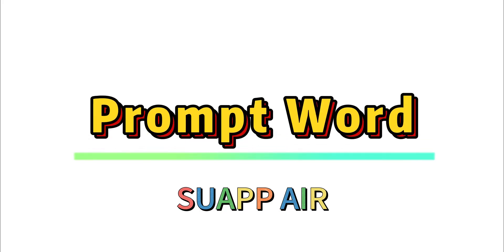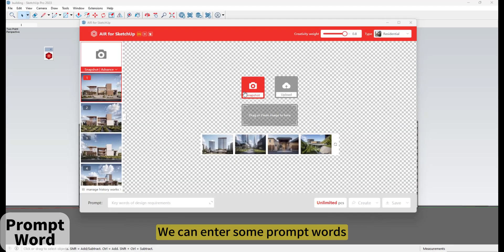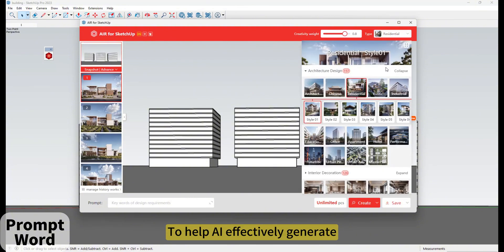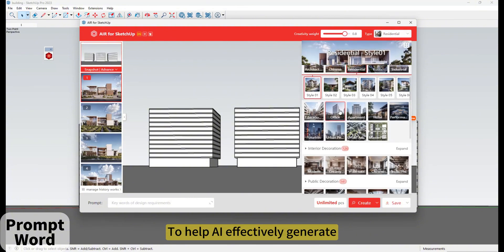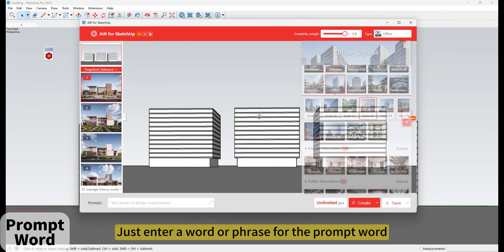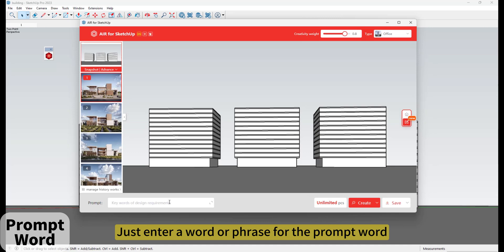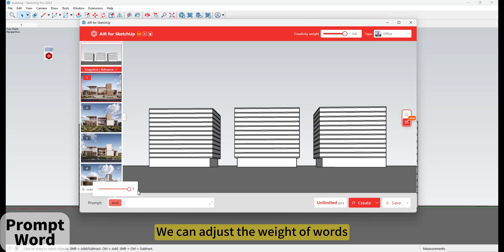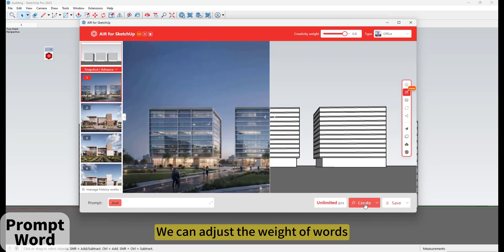Prompt Words: we can enter some prompt words to help AI effectively generate. Just enter a word or phrase for the prompt word. Use Enter to turn words into labels. We can adjust the weight of words.